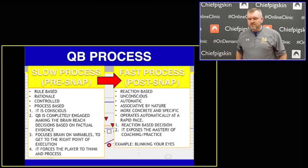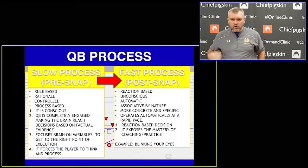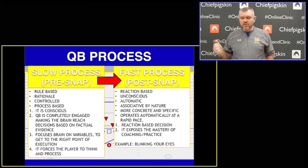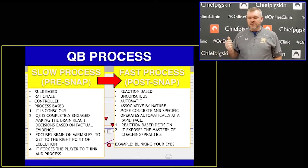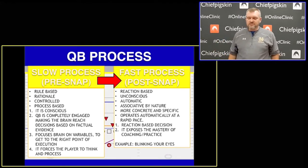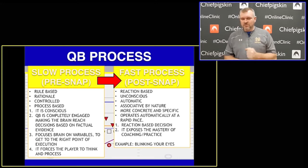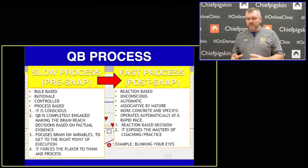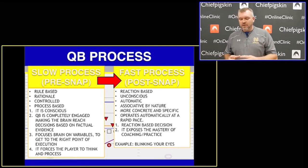The slow process is what we call the pre-snap. It is all rule-based rationale through your brain. It is controlled and it is process-based thinking. It is conscious, and it's engaging the quarterback. It forces the quarterback to use his eyes and brain to come to a decision based on factual evidence. It takes the variables out of the brain to get to a point of execution, and it forces the player to think and process.